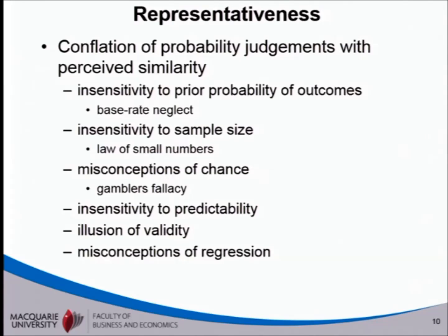The next one is being insensitive to predictability — not taking enough account of the factors that can affect how predictable an outcome is. For example, if people are asked to predict the profit of a firm in a number of years' time and they're given descriptions of the firm, what you tend to find is that people given positive descriptions will predict good profit performance, and people given less positive descriptions will predict low performance. And that's all the information they're given.